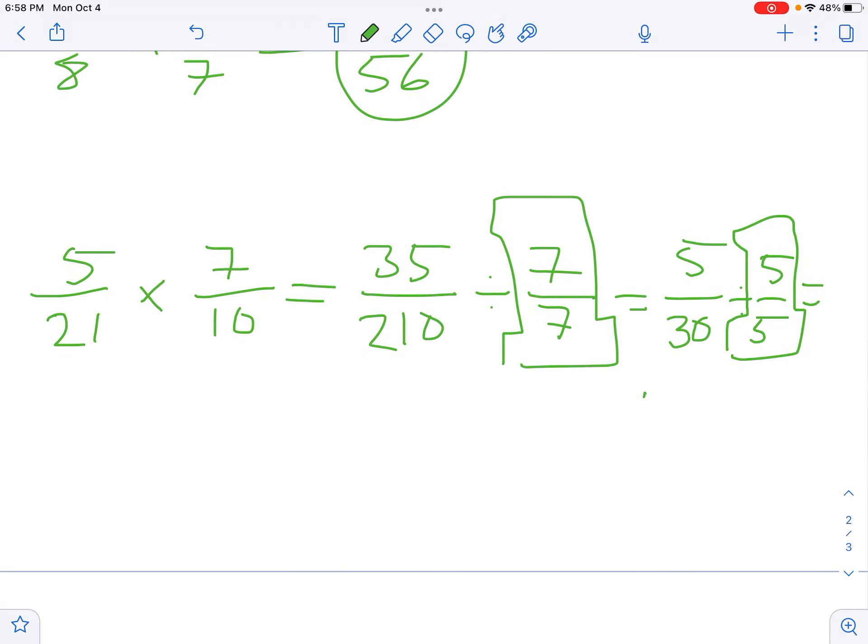5 divided by 5 is 1, 30 divided by 5 is 6. So 5/21 times 7/10 is actually 1/6.